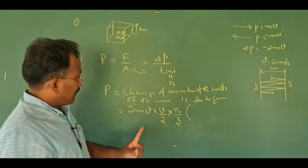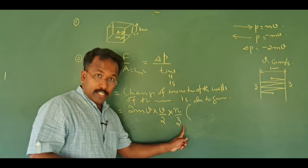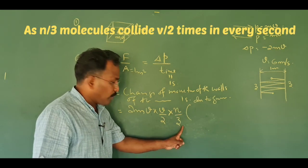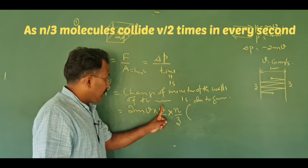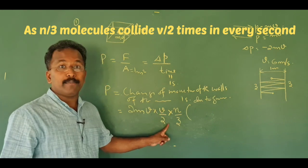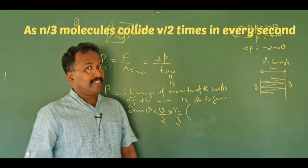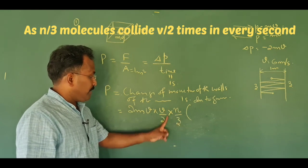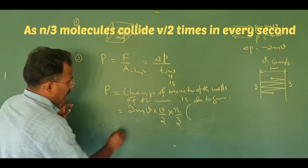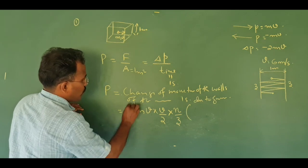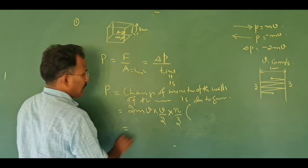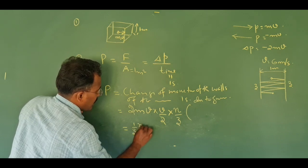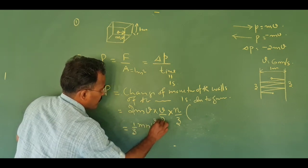As n by 3 molecules collide v by 2 times every second. This is equal to — the 2s cancel out. You will get it as 1/3 × m × n × v².